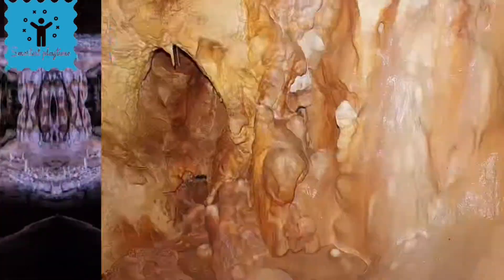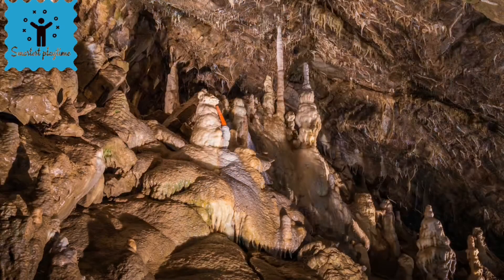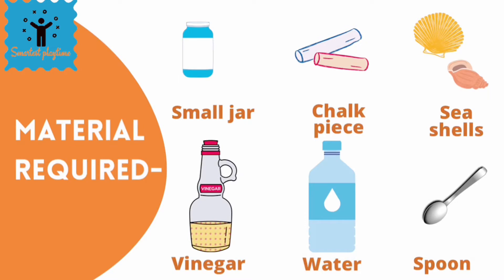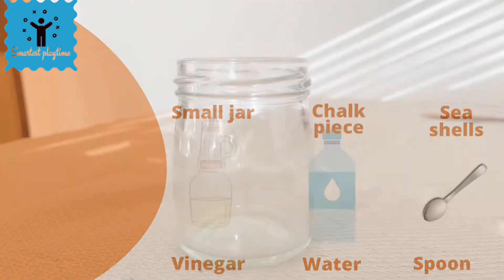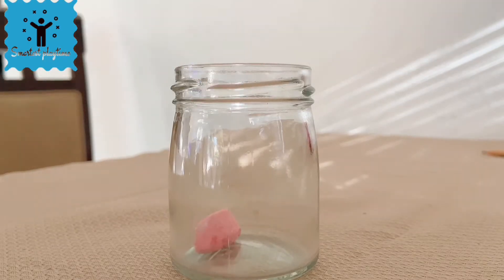Let's do a simple science experiment to find out how these caves are formed. For that, you need three small jars, chalk, peas, seashells, vinegar, water, and a spoon. Take a jar and place a piece of chalk in it.